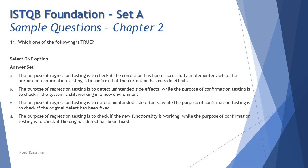Question 11: which one of the following is true? No context given — everything depends on how you read the options. Option A: the purpose of regression testing is to check if the correction has been successfully implemented, while the purpose of confirmation testing is to confirm the correction has no side effect. These definitions are reversed — the descriptions belong to each other's counterpart, so A is incorrect.